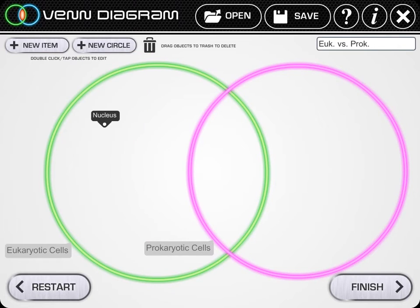As you can see here the nucleus item, remember that was the label, shows up here. I can drag that wherever I want so I could put it here if I thought it was just for eukaryotic cells, they just had a nucleus. I could drag it over here if I thought it was just for prokaryotic cells or I could put it in the middle if I thought both prokaryotic and eukaryotic cells had a nucleus.